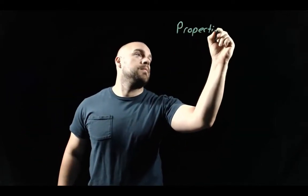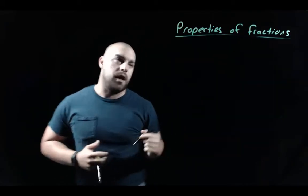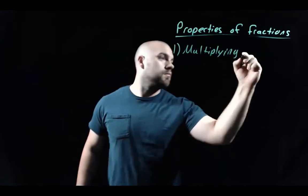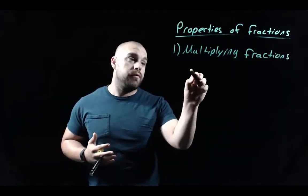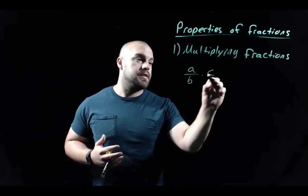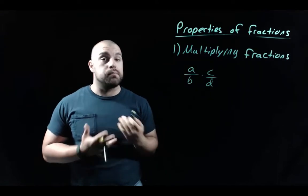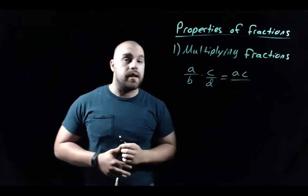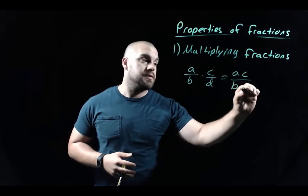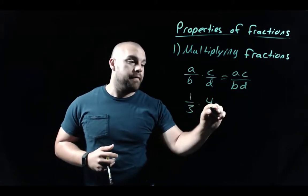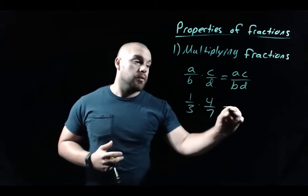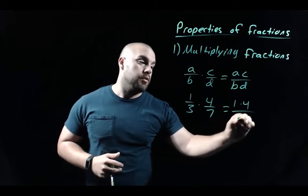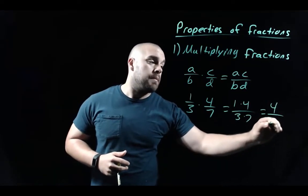Those properties hold true for all real numbers. Now let's talk about some properties specific to fractions, starting with multiplying fractions. If we had a over b times c over d, we multiply the numerators and multiply the denominators: a times c on top and b times d on bottom. So one-third times four-sevenths gives us 1 times 4 on top and 3 times 7 on bottom, which is 4 over 21.